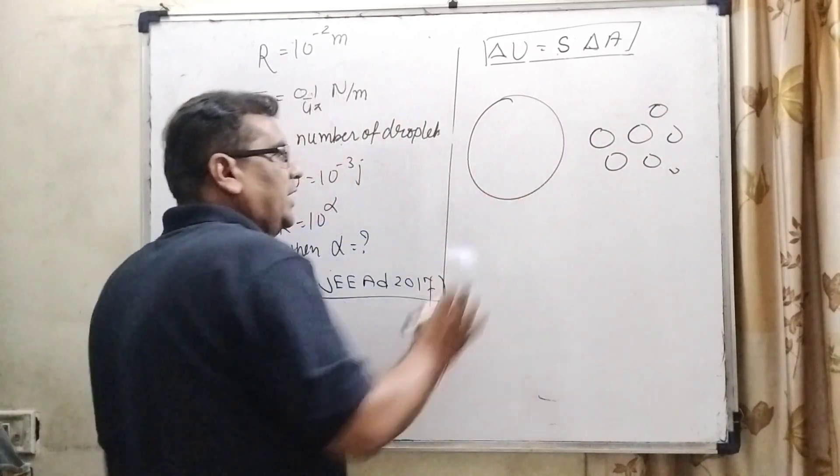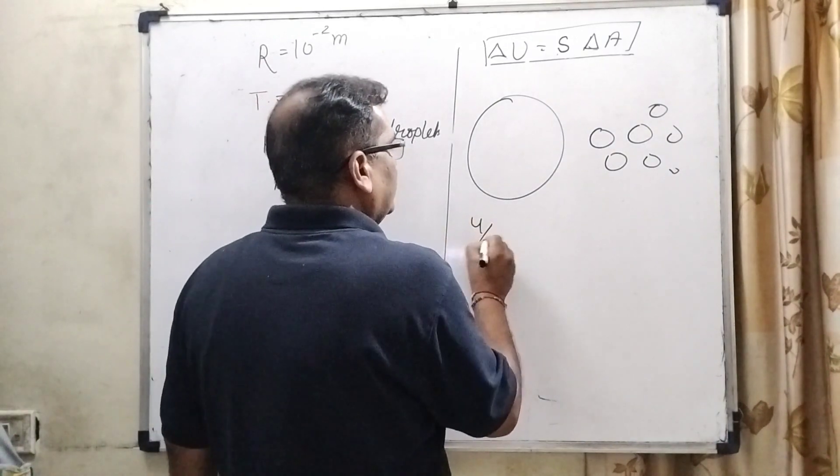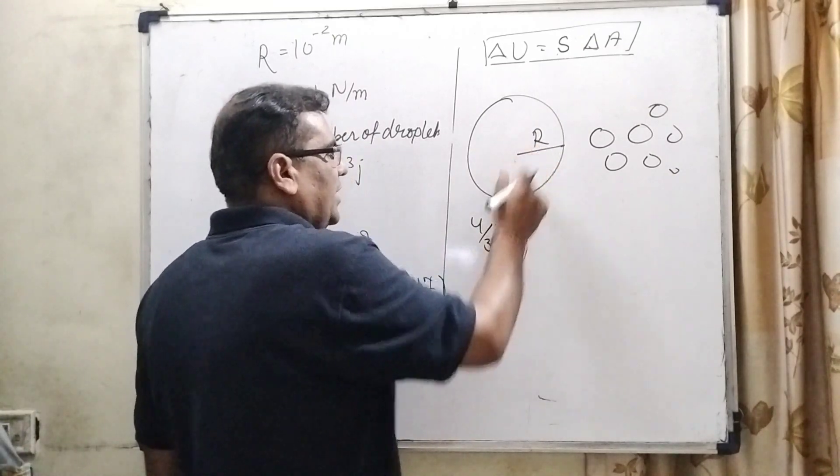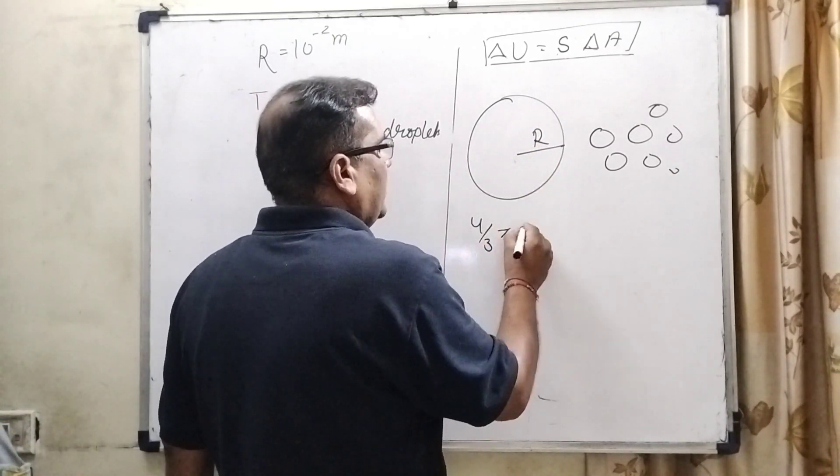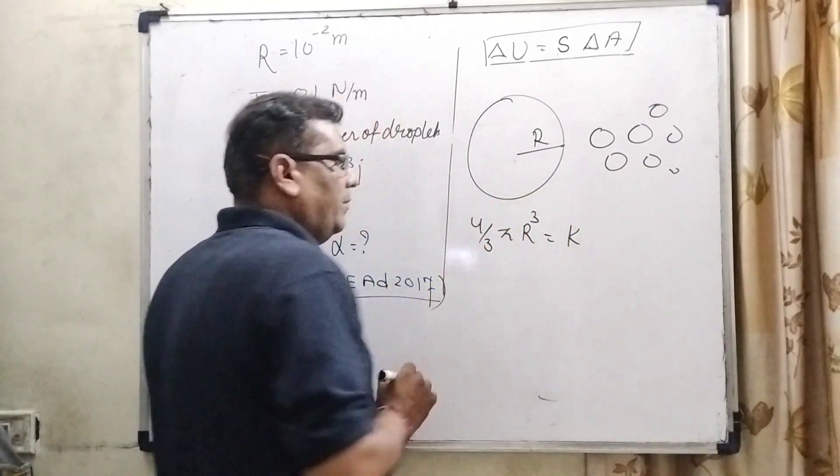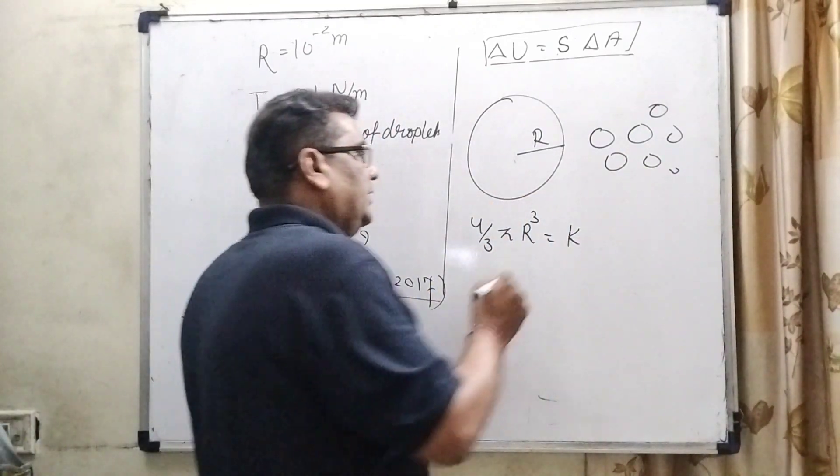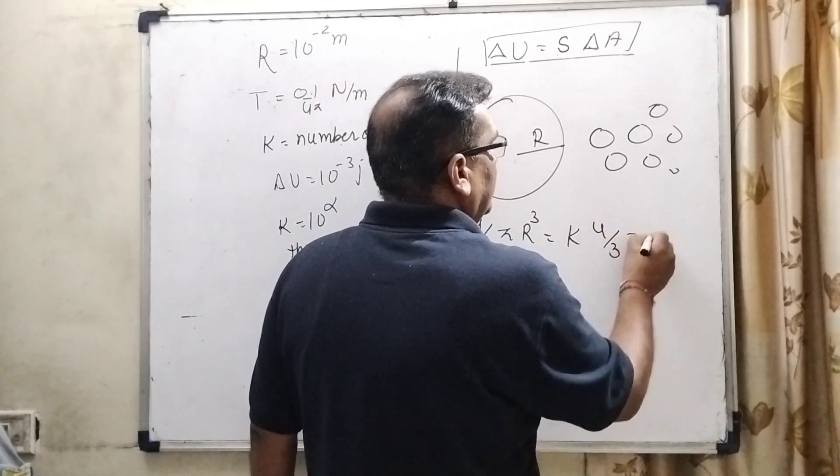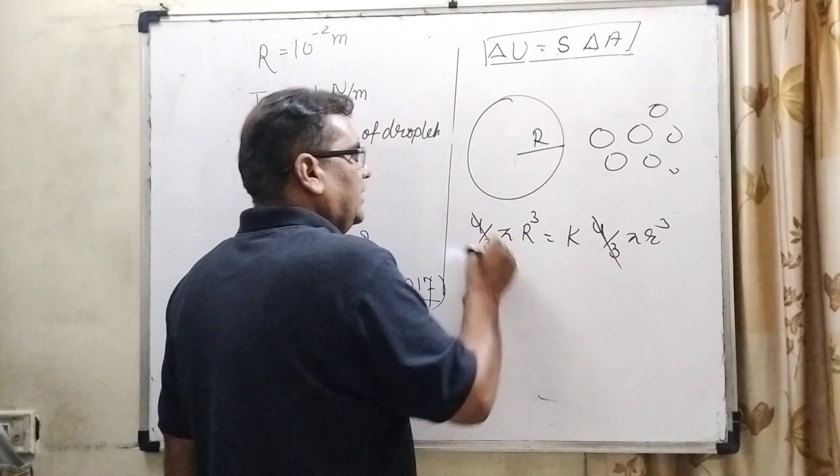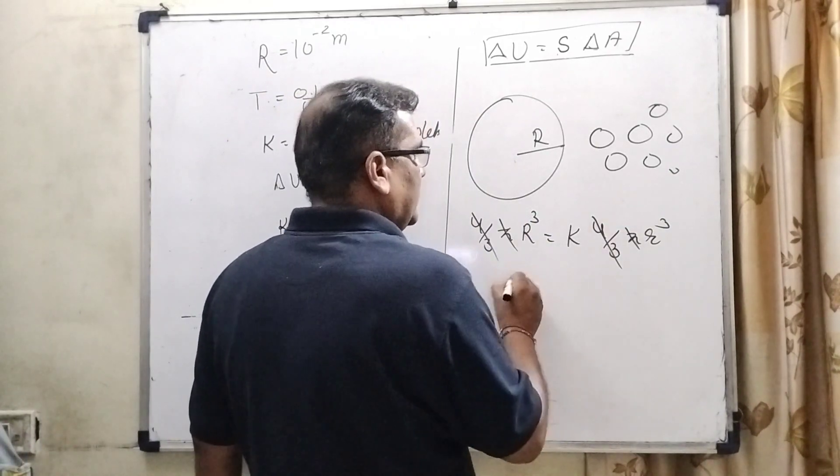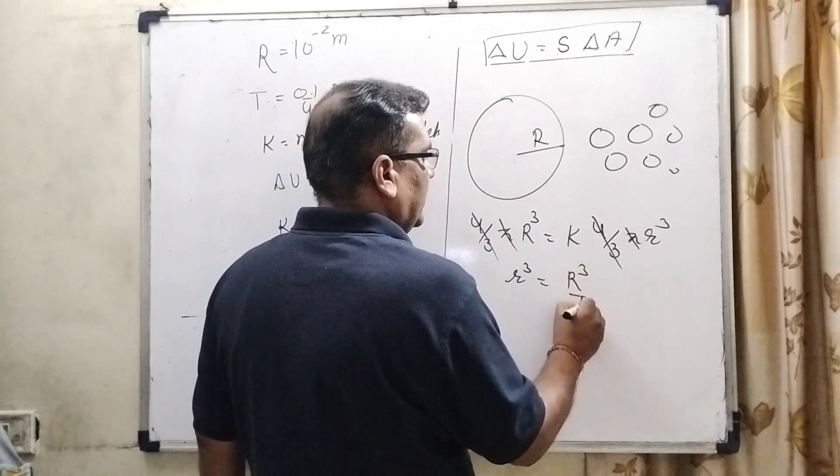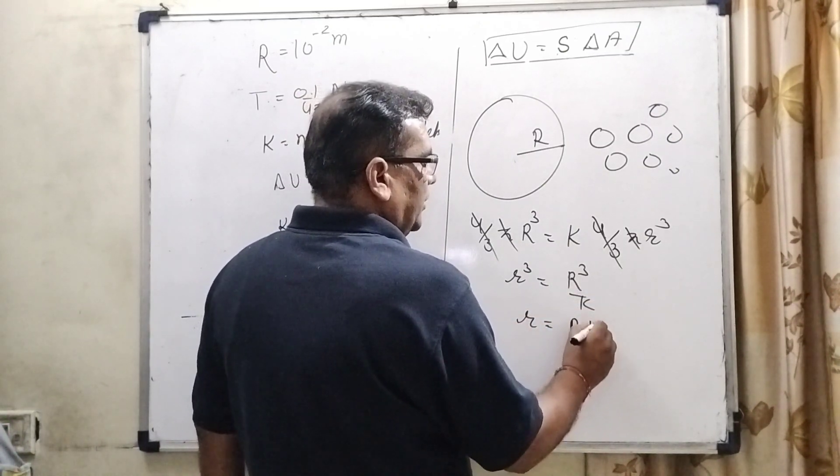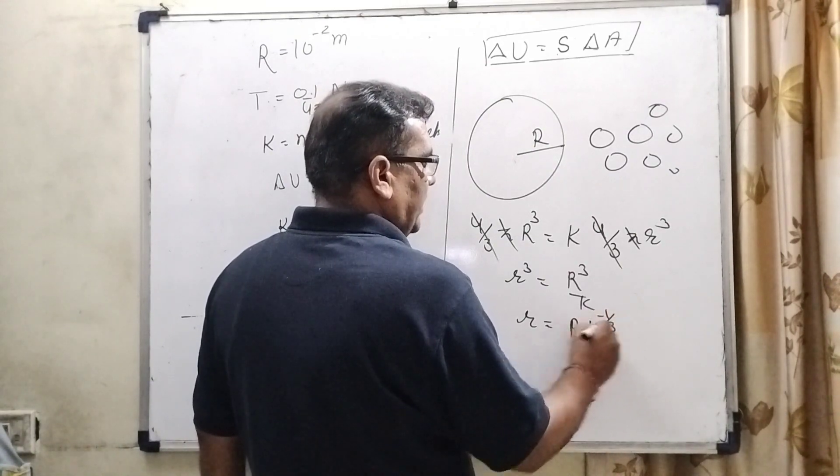As we know that the volume is not changed in that case, 4 by 3 pi capital R cube. Let us consider the radius of the big drop is capital R and number of droplets k is considered in the given question. So therefore, 4 by 3 pi small r cube. 4 by 3 cancel out, pi cancel out, then small r cube equal to capital R cube by k. Then small r equal to R into k raised to power minus 1 by 3.